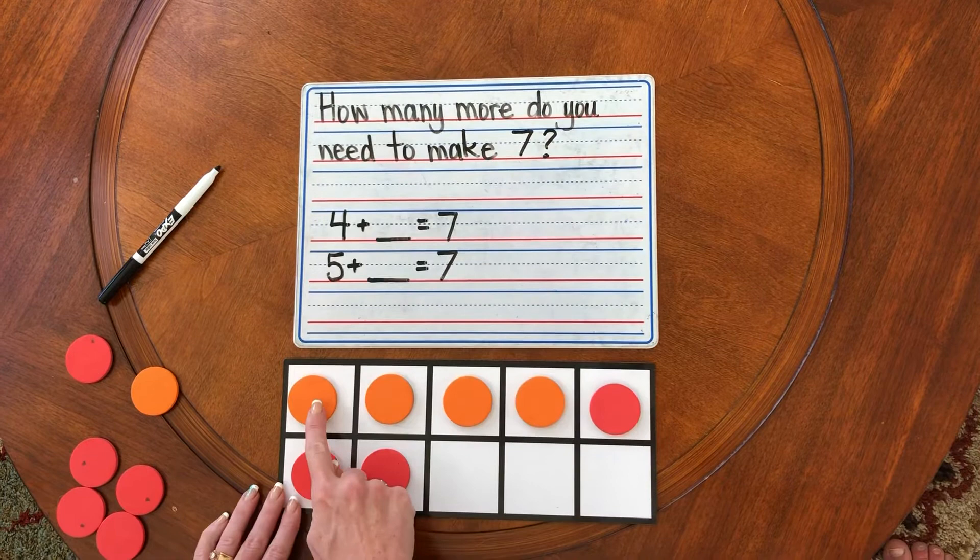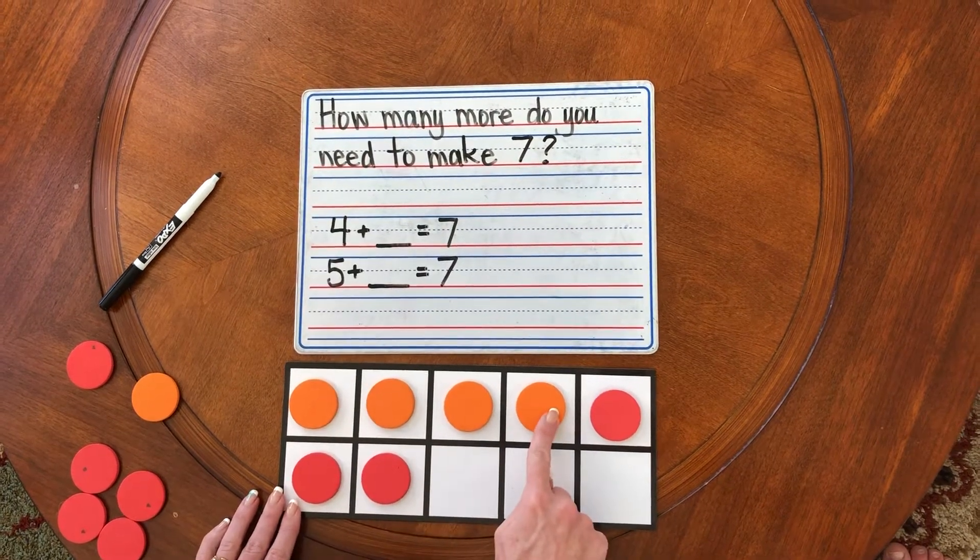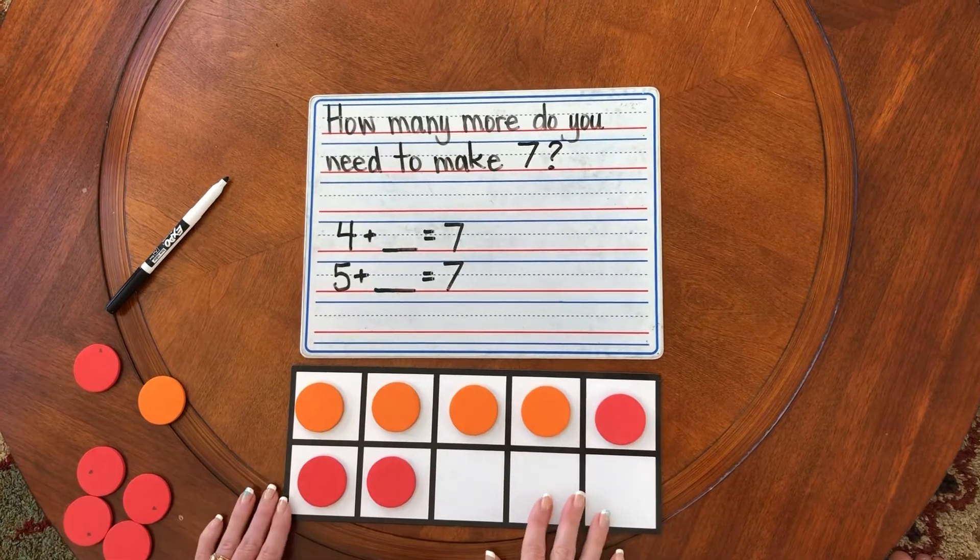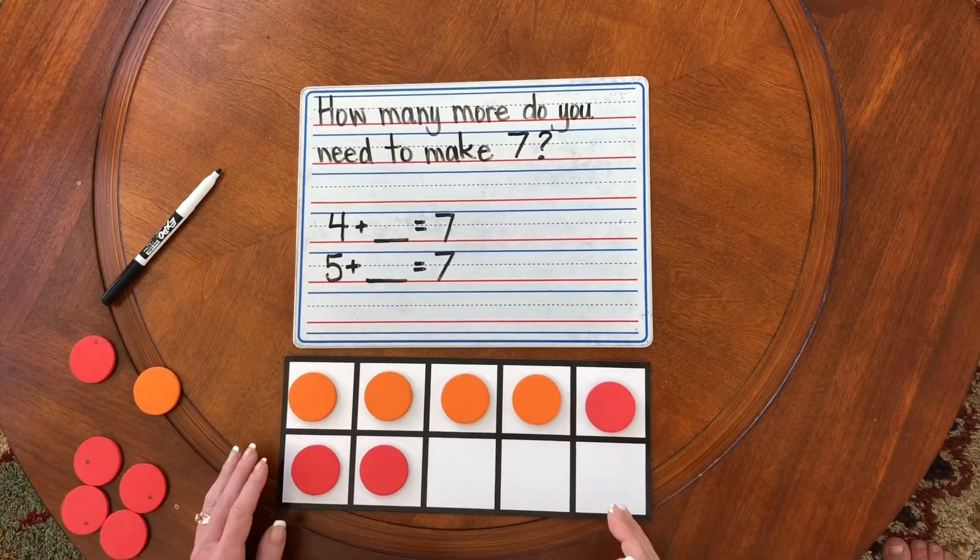You got to seven. We have four orange, pardon me, counters.